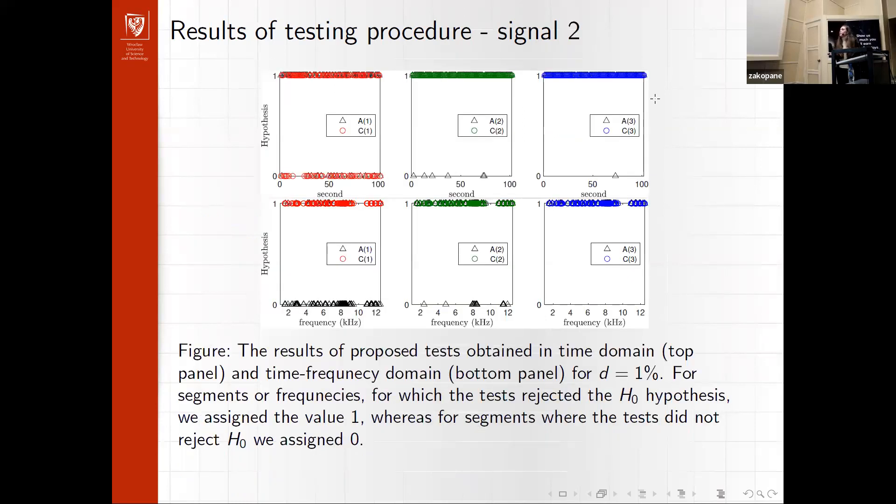Results for signal 2. In the top panel, we see results obtained for time domain. In the bottom panel, we can see results obtained for time-frequency domain, for spectrogram representation. The logic is the same: 0 for not rejecting the null hypothesis and 1 for rejecting it. We can see that also in most cases, signal 2, both in time and time-frequency domain, is classified as infinite variance signal.